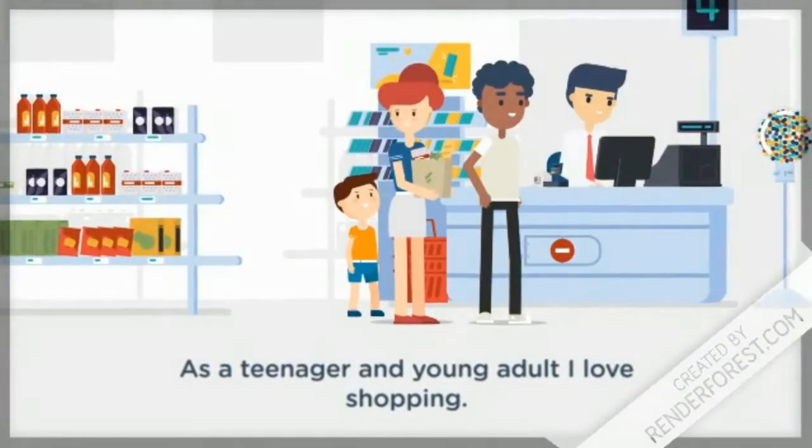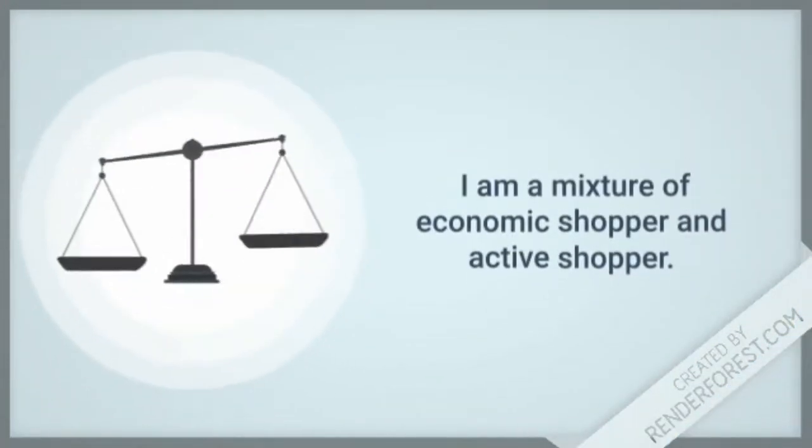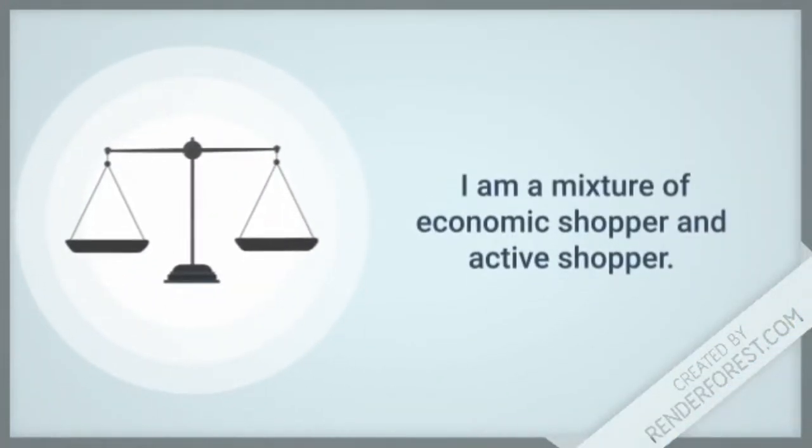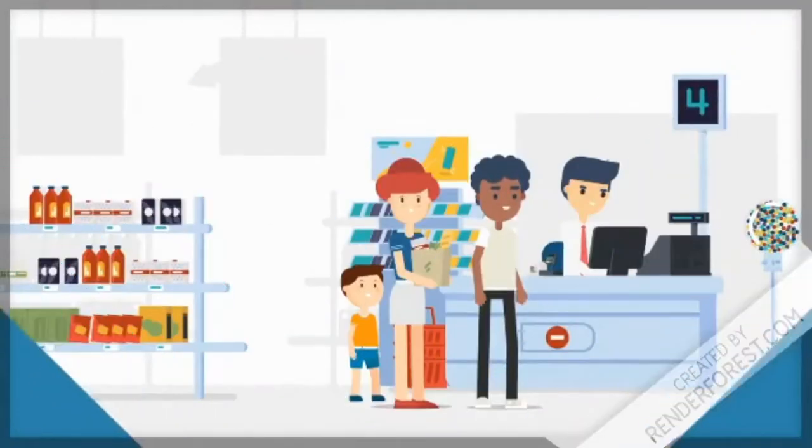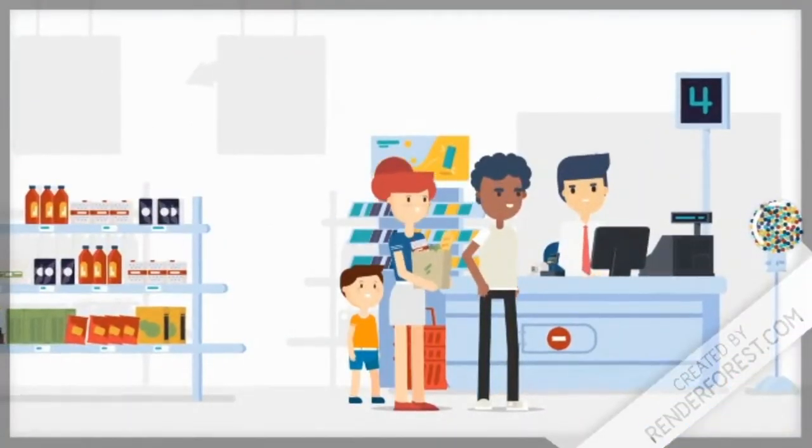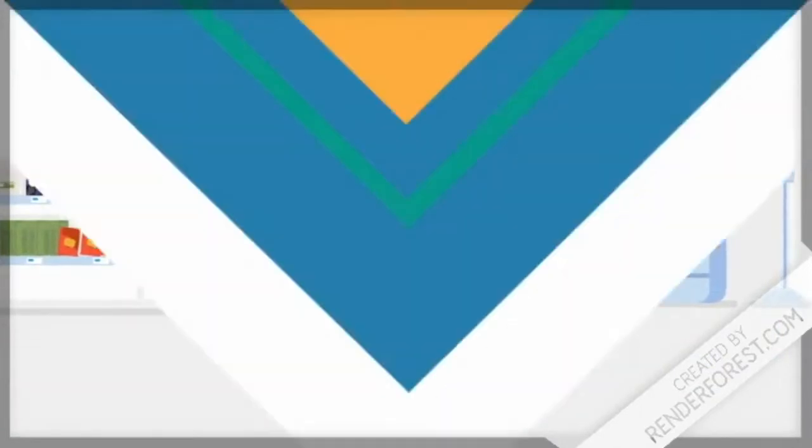Timothy, in the chapter Recreational Shopping: Leisure and Labour, in the book Shopping, Tourism, Retailing and Leisure, explores the different types of shoppers. Personally, I have a mixture of several shoppers depending on the situation. Generally, I am a mixture of economic shopper and active shopper. The price is an important part of shopping, while I strive for high-quality products. I also pay close attention to the price.